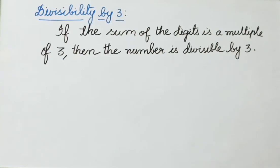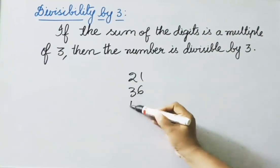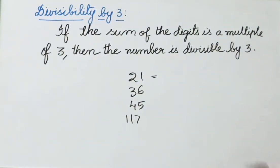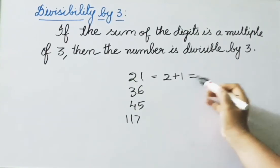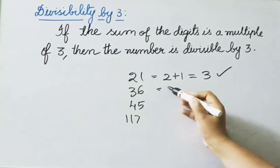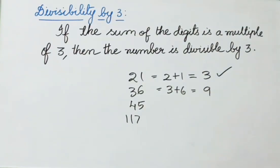Now let us see divisibility by 3. If the sum of the digits is a multiple of 3, then the number is divisible by 3. For example, 21: 2 plus 1 equals 3, which is a multiple of 3, so it is divisible by 3. For 36: 3 plus 6 equals 9, and 9 is a multiple of 3, so it is also divisible by 3.